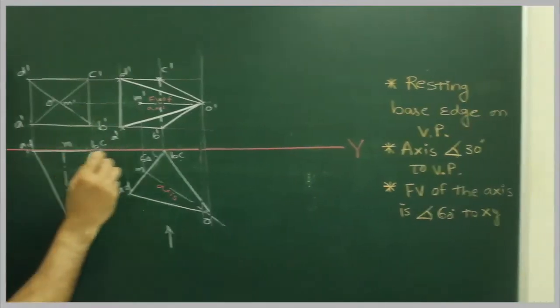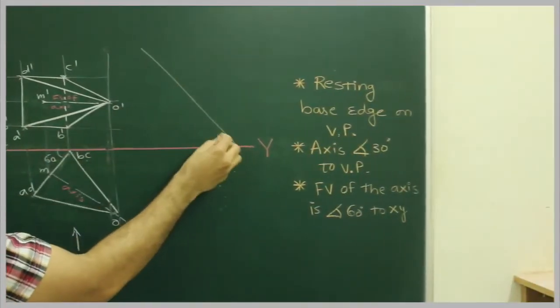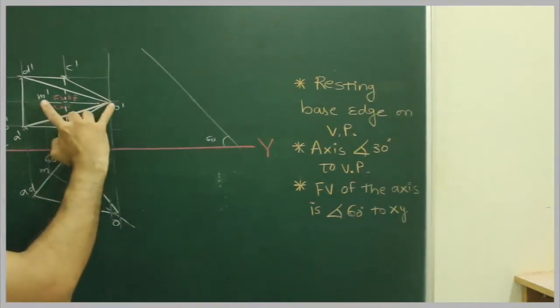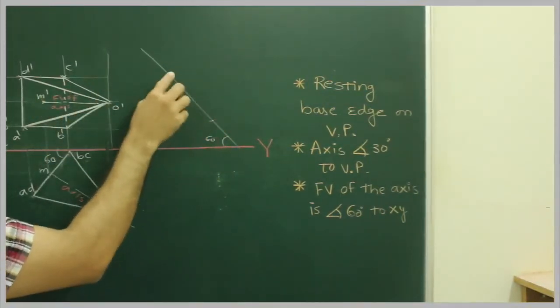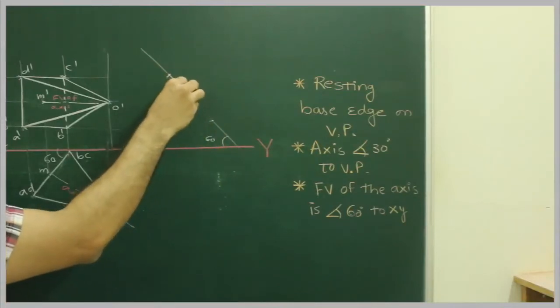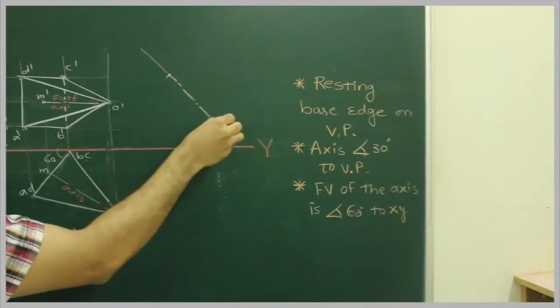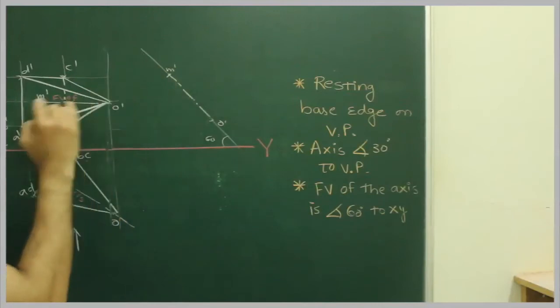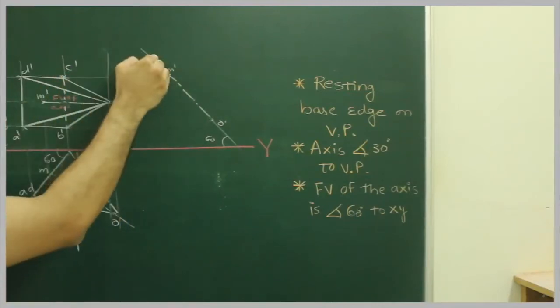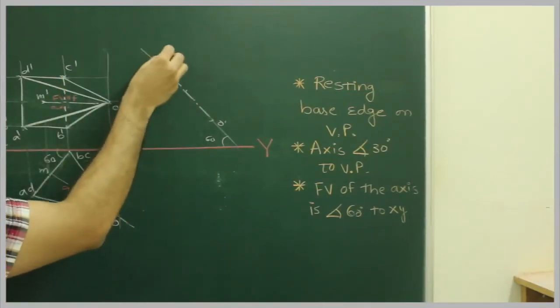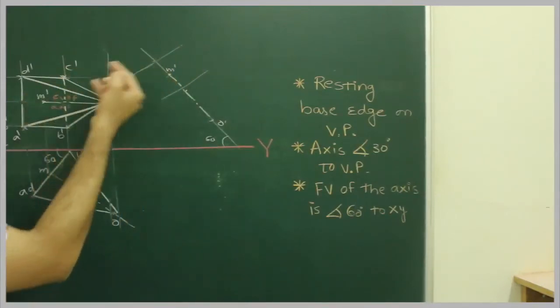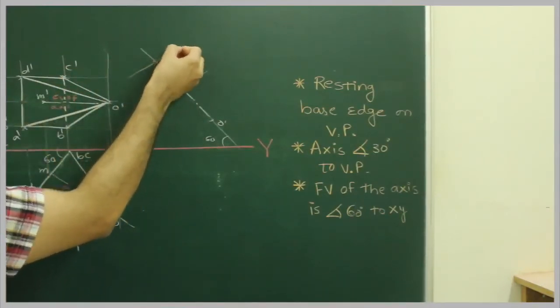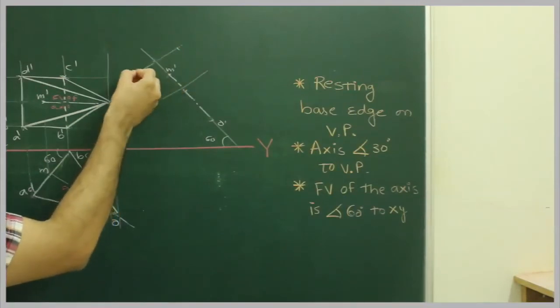We will draw 60 degree from here. We will take o dash to m dash. Cut down this. Take this distance. Cut down as well as down.